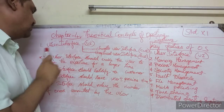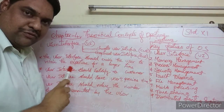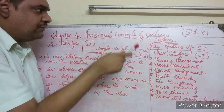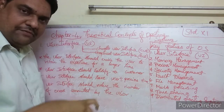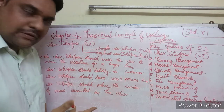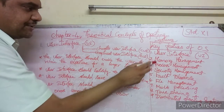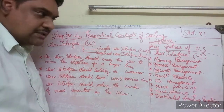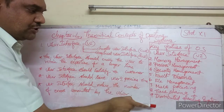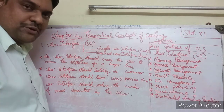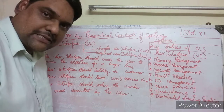Today we are going to see about the key features of operating systems in the fourth chapter. Most operating systems have nine key features: user interface, memory management, process management, security management, fault tolerance, file management, multi-processing, time sharing, and distributed operating system.